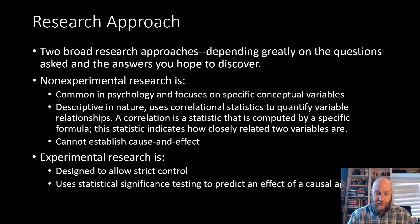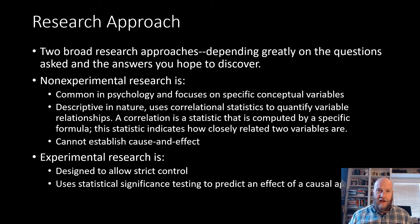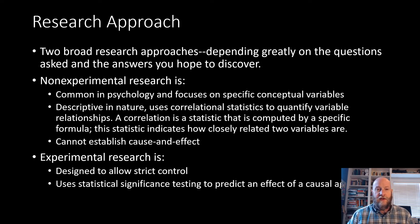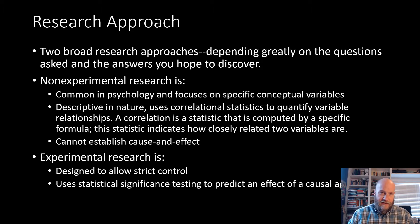Non-experimental research tends to use correlational statistics to quantify relationships between variables. Remember that correlation simply means that two things vary in a systematic way. Height and weight in human beings are highly correlated — the taller you are, the more you tend to weigh, and inversely, the shorter you are, the less you tend to weigh. But it doesn't establish cause and effect; it simply says these two things co-vary. The statistics from non-experimental research indicate how closely two things are related but don't explain any causal relationship.